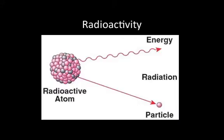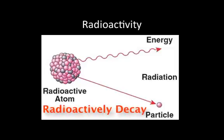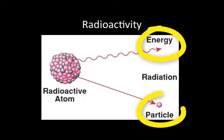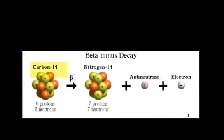Radioactive isotopes have atomic nuclei that will break down — or radioactively decay — into a more stable nucleus. The decay process gives off very powerful electromagnetic energy and high-energy particles. Carbon-14 goes through something known as beta decay; it decays into a stable form of nitrogen-14.